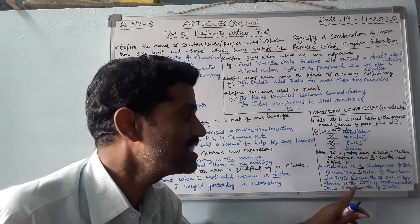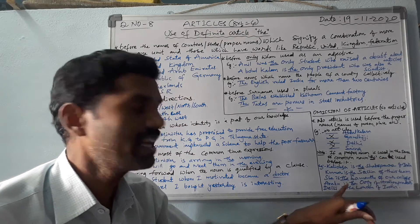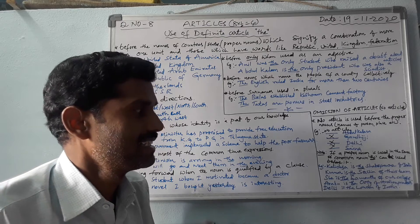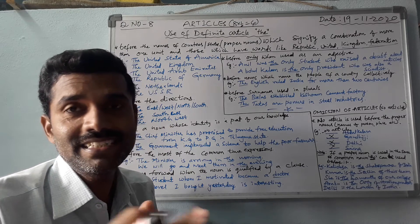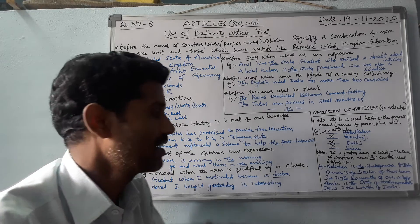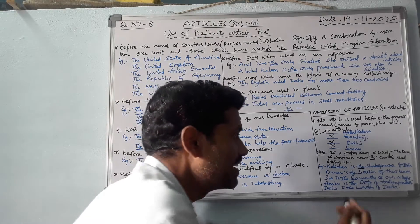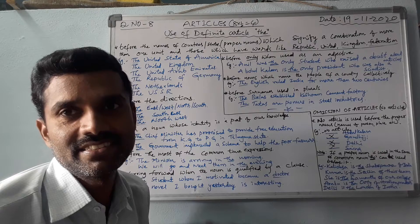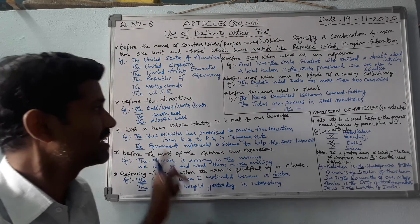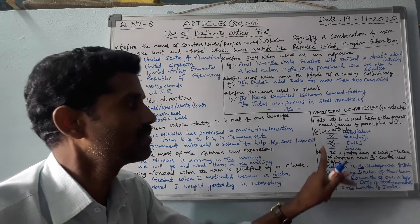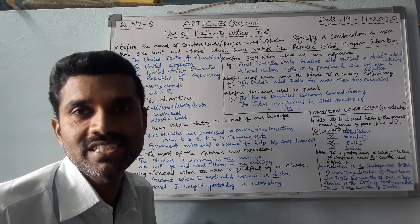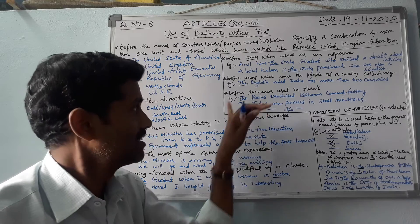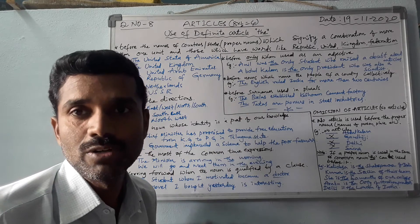Next, 'Araku is the Ooty of Andhra Pradesh.' Araku Valley is compared to Ooty, which is situated in Tamil Nadu. Also, 'Delhi is the London of India' — Delhi is compared to London. These are the remaining rules and omission rules. Some more omission article rules are there which we will complete tomorrow. Please note these down in your notebook.